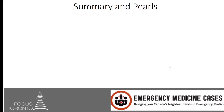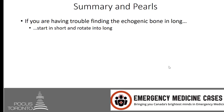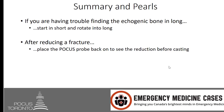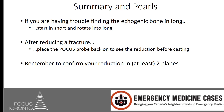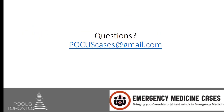Here's a summary. Number one: if you're having trouble finding the echogenic bone in long axis, start in short axis and rotate into long to identify which echogenic line is your bone. Number two: after reducing a fracture, place the POCUS probe back on the patient's arm post-reduction before casting to ensure adequate reduction. Finally, confirm your reduction in at least two planes, just as you would get more than one view on X-ray. For any questions, email pocuscases@gmail.com.